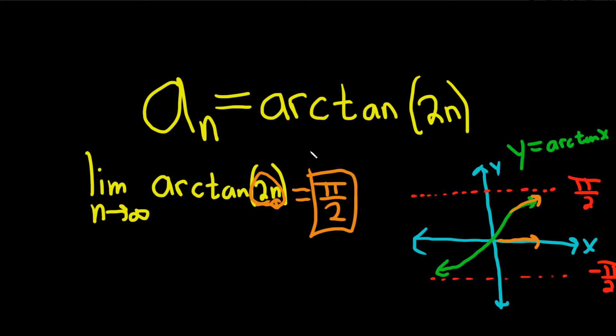And so it's going to be very similar to this, where it approaches pi over 2. So pi over 2 is the answer. This is called the limit of the sequence. And because we have a limit, because we have a number, we say the answer is converges.